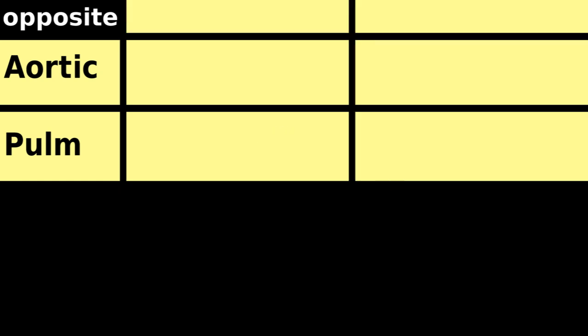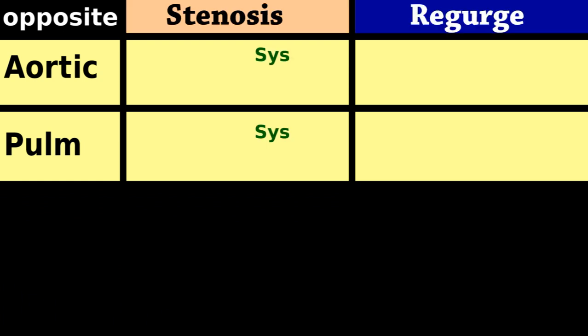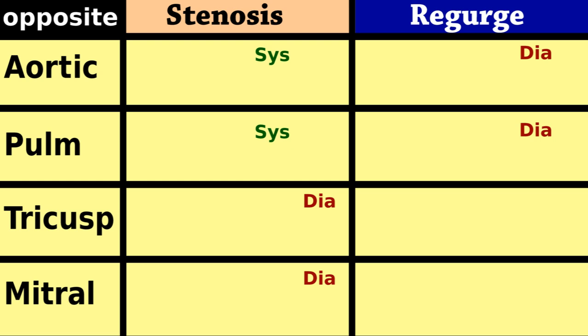Also, if superior stenosis is systole, superior regurgitation is diastole. Completing the opposite pattern fills out the full table.